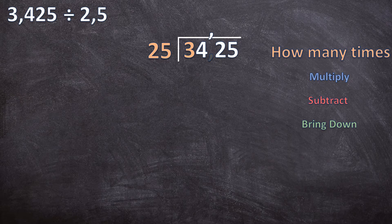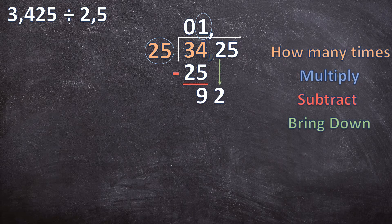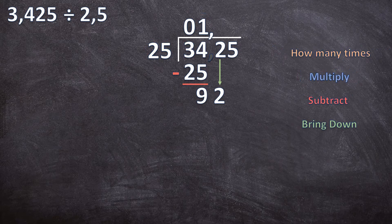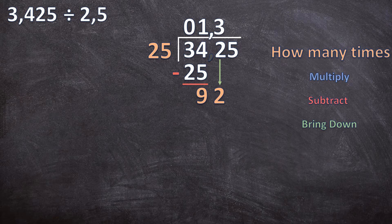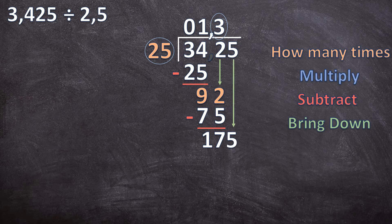Let's get started. How many times can 25 go into 3? It cannot, so I write a 0 and include the next digit. How many times can 25 go into 34? Once. Multiply: 1 times 25 is 25. Subtract: 34 minus 25 is 9. Bring the next digit down — ignore the comma, bring the next digit down. How many times can 25 go into 92? Three times. Multiply: 3 times 25 is 75. Subtract: 92 minus 75 is 17. Bring the 5 down.